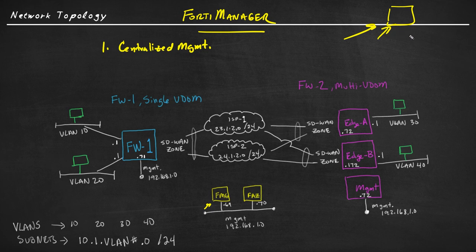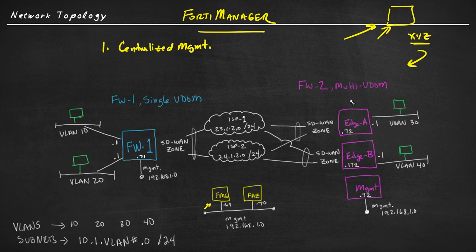Think about some parameter — we'll call it XYZ — that we wanted to implement on 20, 30, or 100 different devices. Instead of doing it manually on all devices, we could set that up in FortiManager and then push that out with a few clicks to all of our FortiGates, or a subset of our FortiGates, or a subset of our VDOMs, based on where we wanted that configuration to be applied.